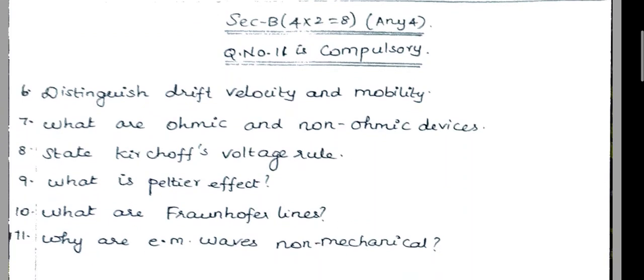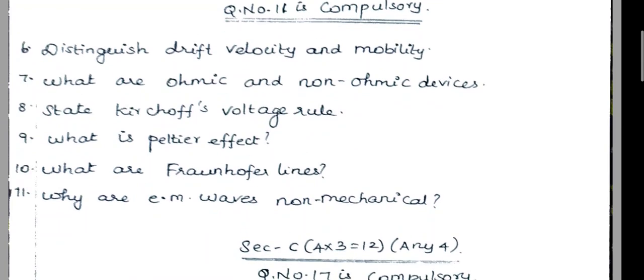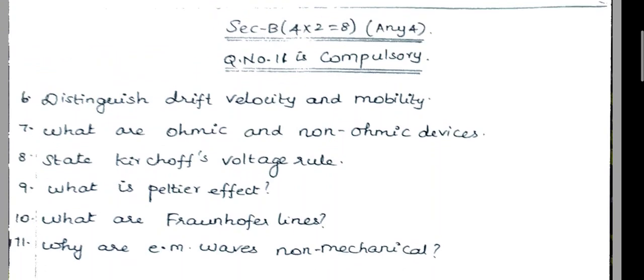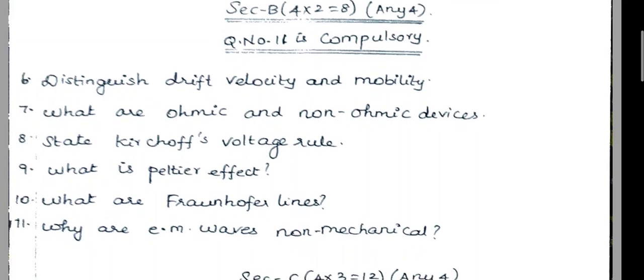are ohmic and non-ohmic devices. Eight question — state Kirchhoff's voltage rule. Nine question — what is Peltier effect. Ten question — what are Fraunhofer lines. Eleven question — why are electromagnetic waves non-mechanical. So isla, all question the normal question compulsory.